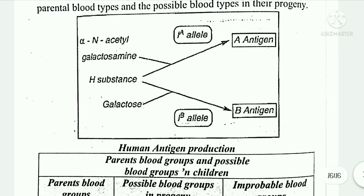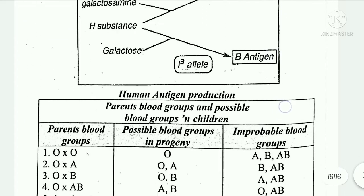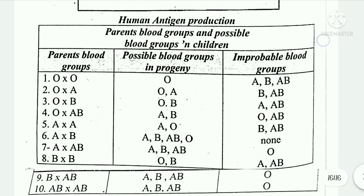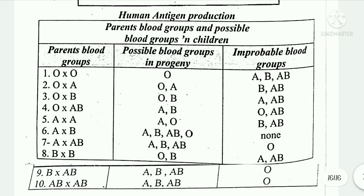This covers all the second unit Geology important questions for third semester. The next video will cover third unit important questions. Check the description for all subjects like chemistry and botany. On screen you can see a table showing human antigen production, parents' blood groups, and children's possible blood groups.